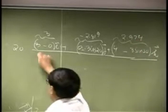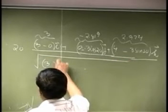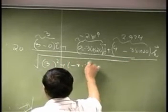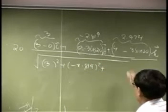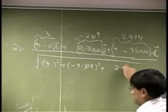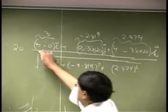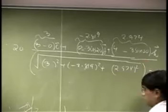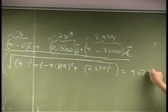So its length will be 3 squared plus negative 2.81 squared, and then you have the 2.974 squared. And this bottom part here, if you go to the numbers, it comes out to be 5.0785.